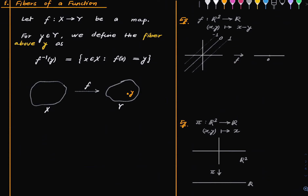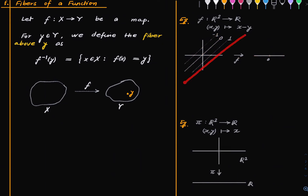So the fiber above 0 is this, the fiber above 1 is that, the fiber above minus 1 is that, and so on. For any real number you can take the fiber above that and you'll get a line.